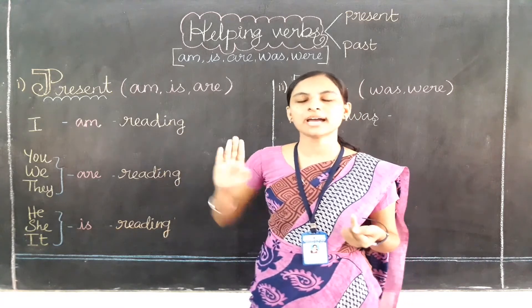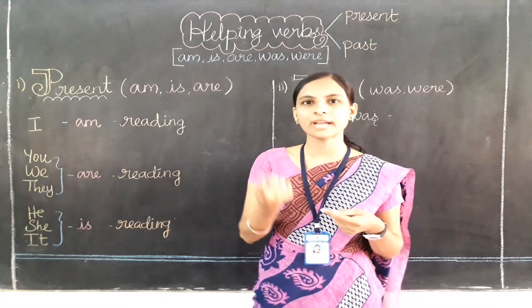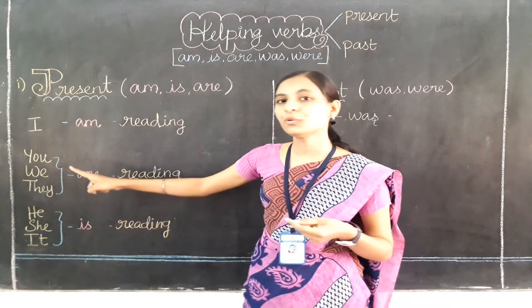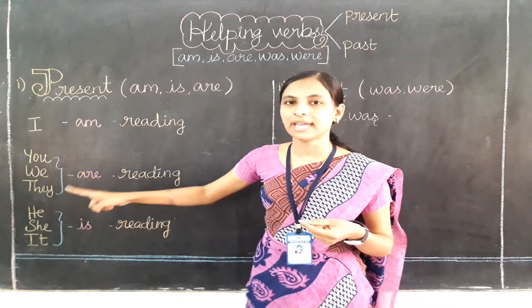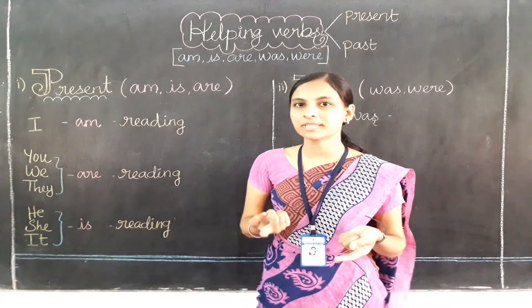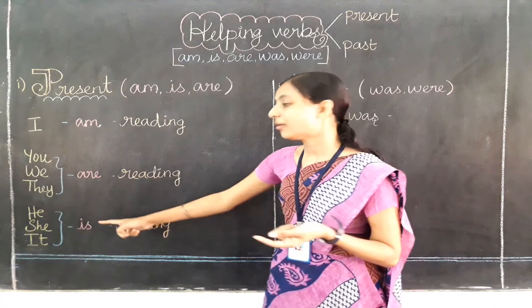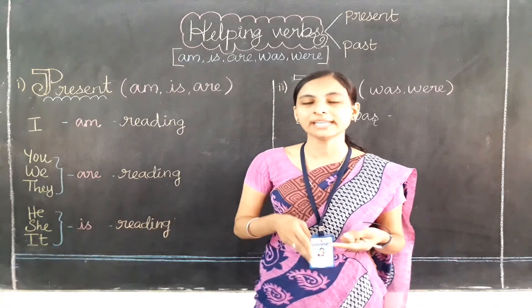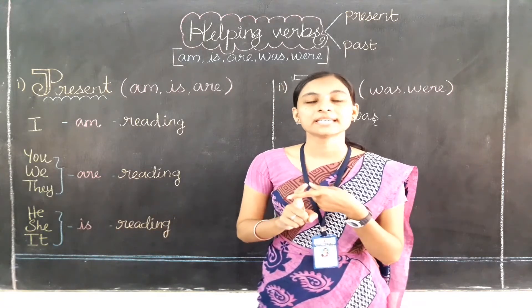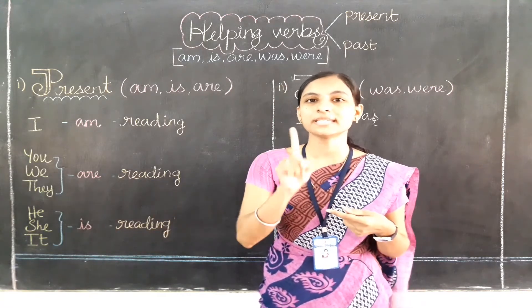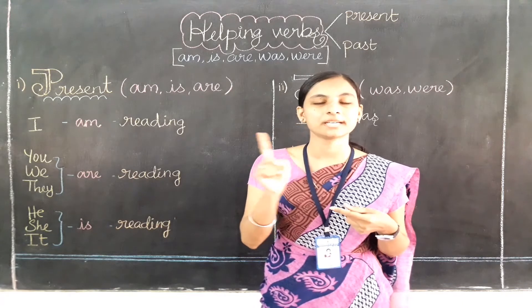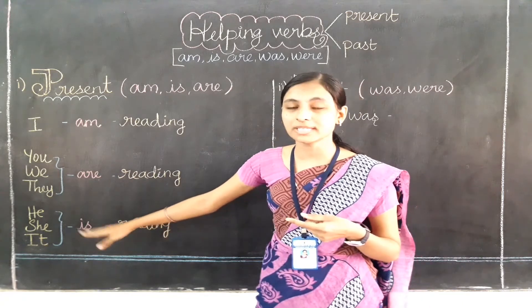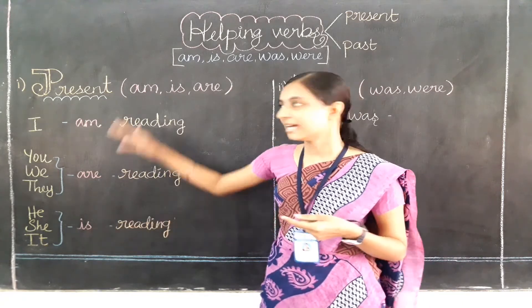Remember: 'am' is used for 'I'. 'Are' is used for you, we, they, plus plural names. 'Is' is used for he, she, it, plus a single person's name.